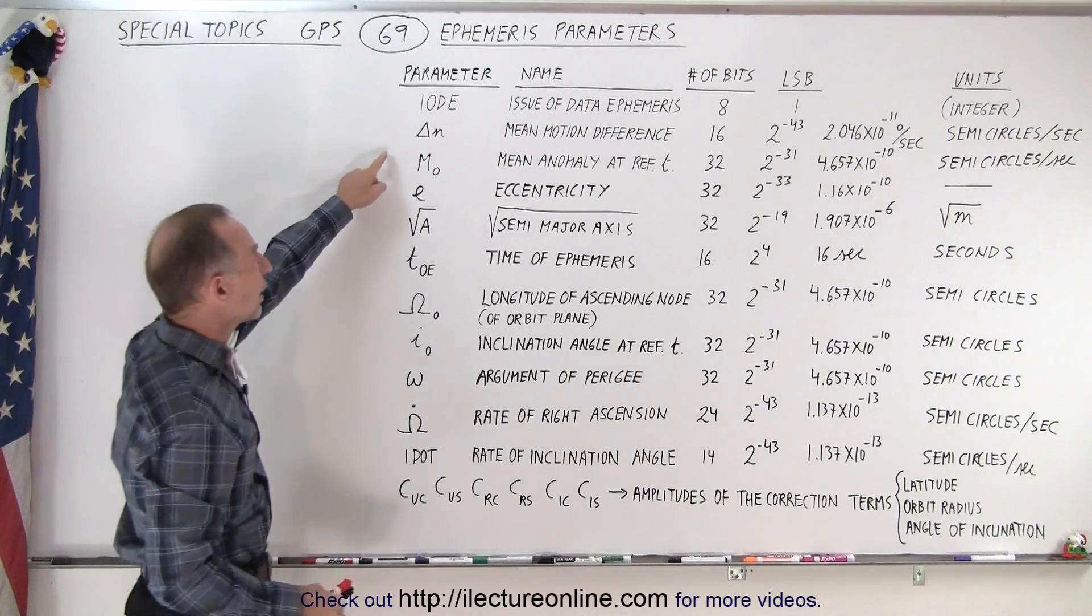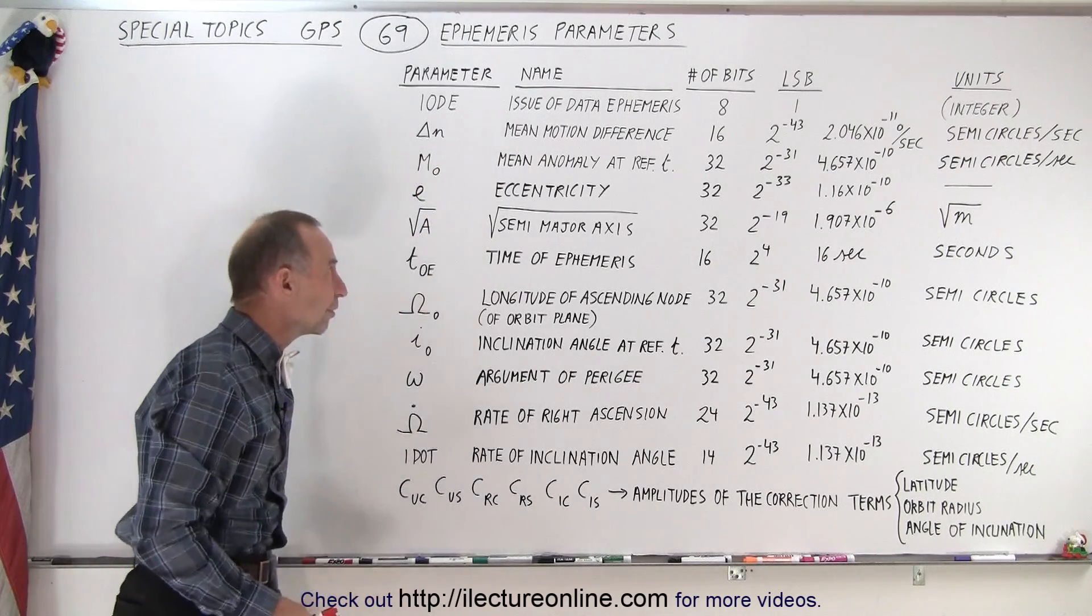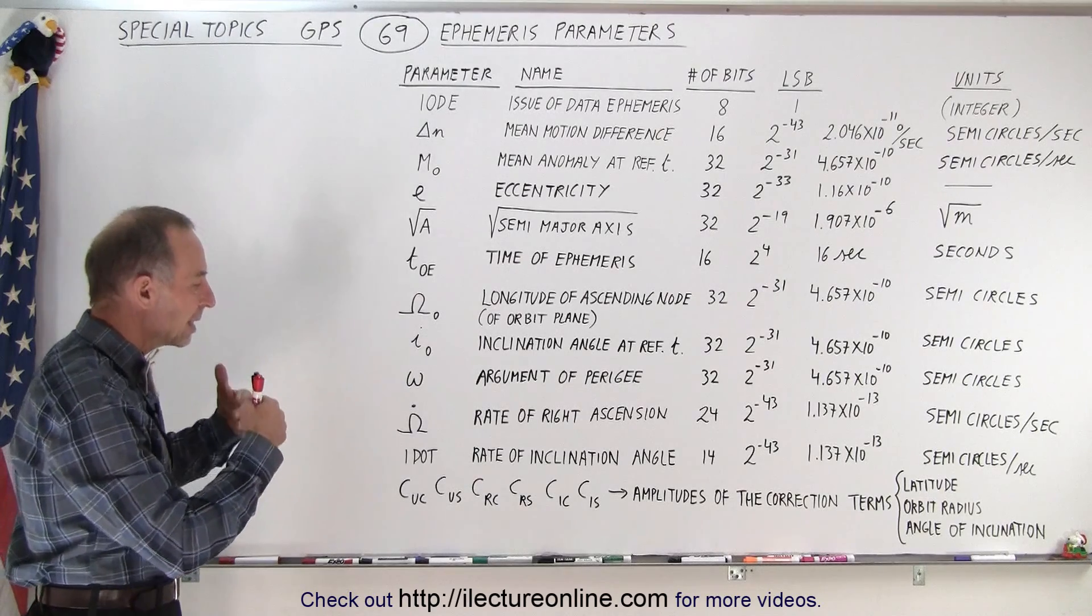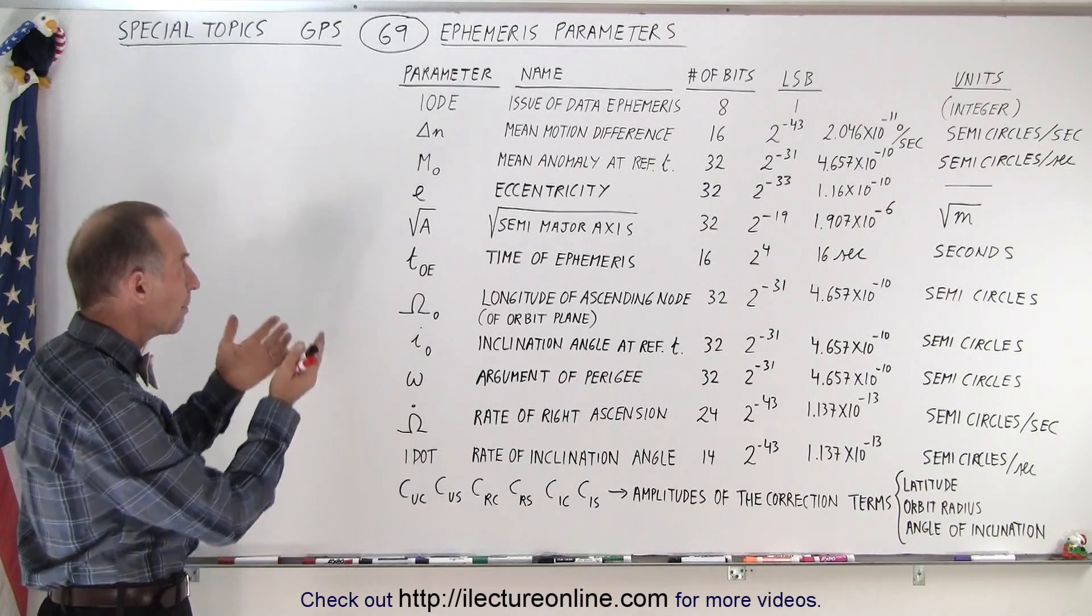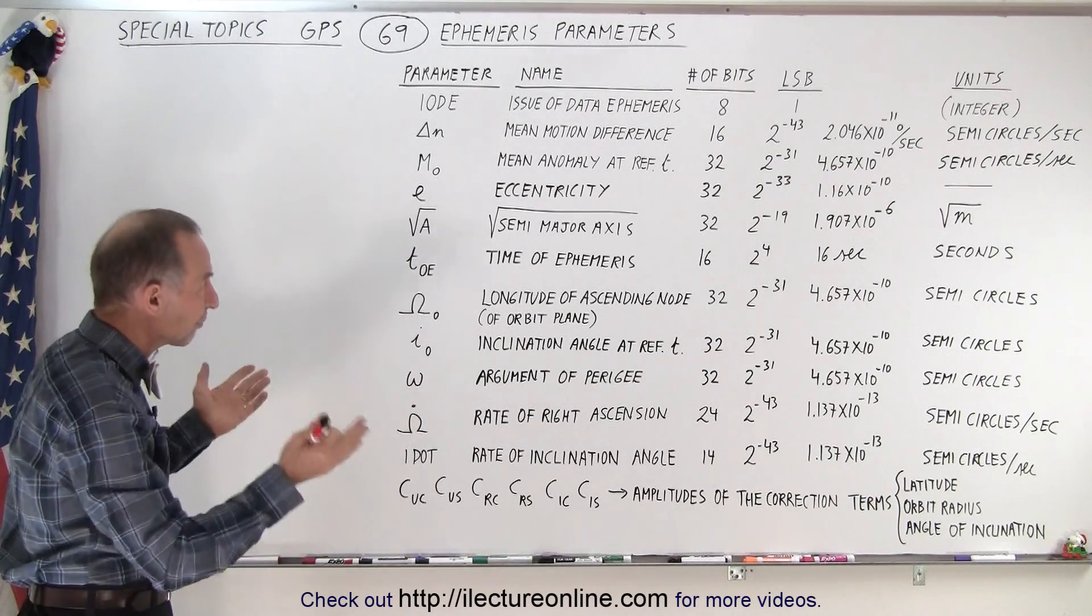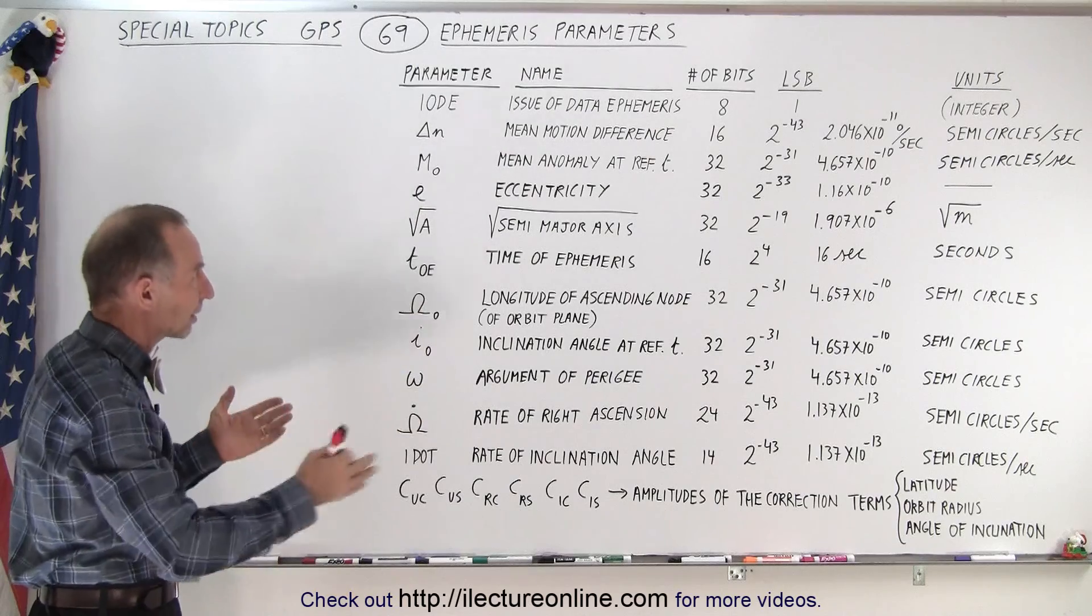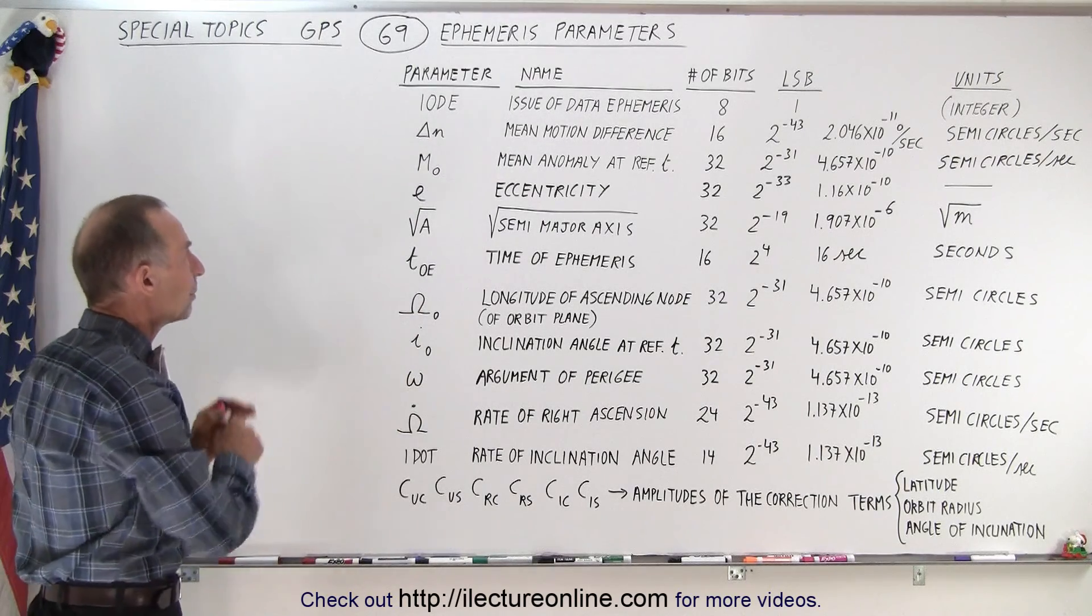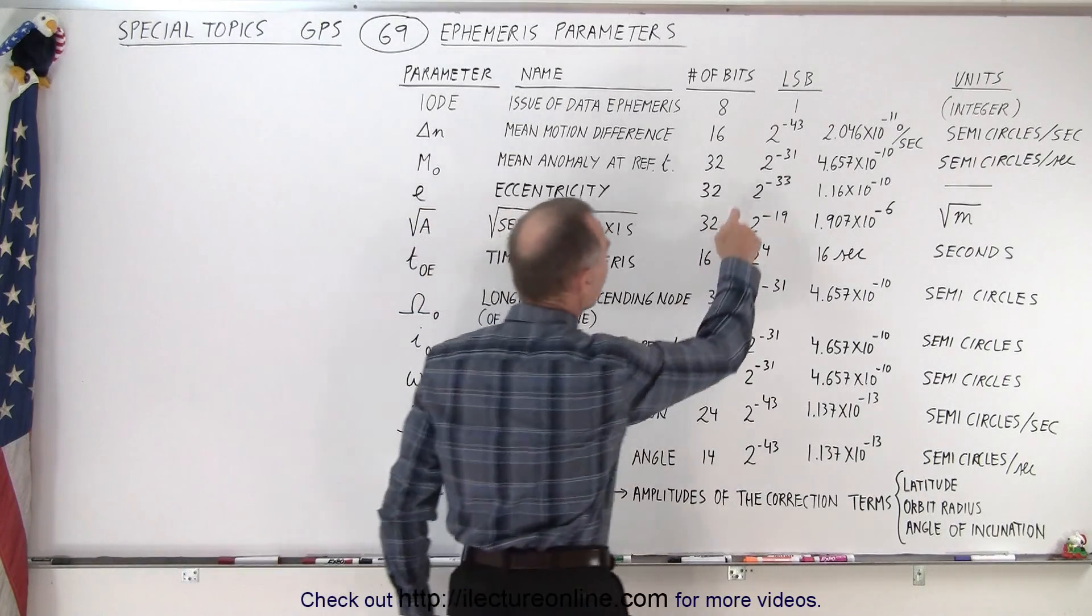The next one is delta N which is the mean motion difference. That means it's the difference between the mean motion, the expected motion, and the calculated motion. There's a difference between the two. We have a theoretical calculated motion and we want to know what the delta is between that and the mean motion.